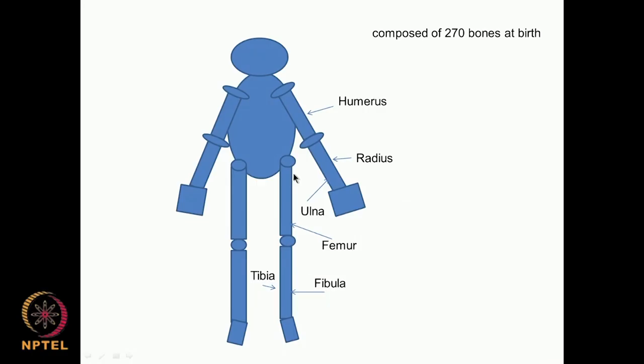That is why metals are used quite a lot in orthopedic situations — like stainless steel 316L, titanium, and alloys — because these can take up a lot of load. If you look at these parts, they are going to take up the load of the human being, so they have to be quite strong.